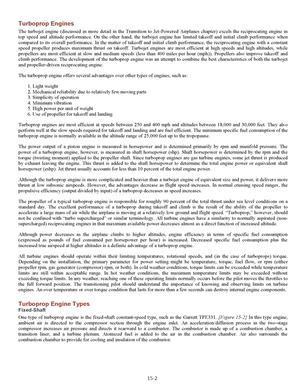The turboprop engine offers several advantages over other types of engines, such as: 1) Lightweight; 2) Mechanical reliability due to relatively few moving parts; 3) Simplicity of operation; 4) Minimum vibration; 5) High power per unit of weight; 6) Use of propeller for takeoff and landing. Turboprop engines are most efficient at speeds between 250 and 400 mph at altitudes between 18,000 and 30,000 feet. They also perform well at the slow speeds required for takeoff and landing and are fuel efficient. The minimum specific fuel consumption of the turboprop engine is normally available in the altitude range of 25,000 feet up to the tropopause.